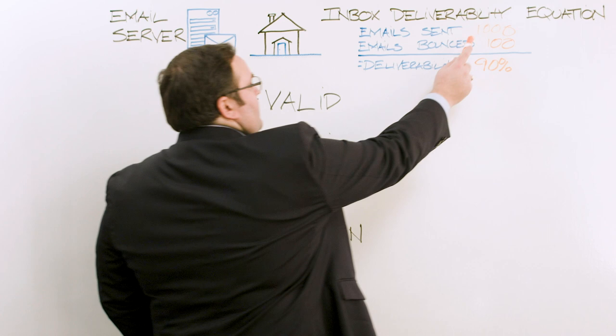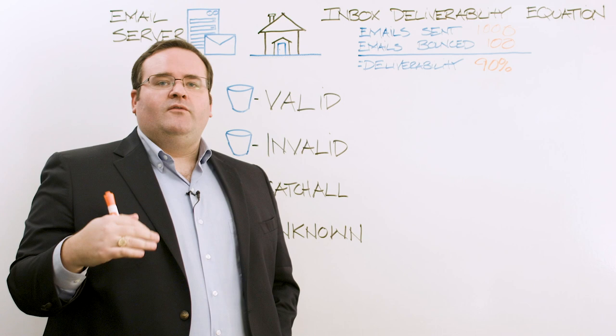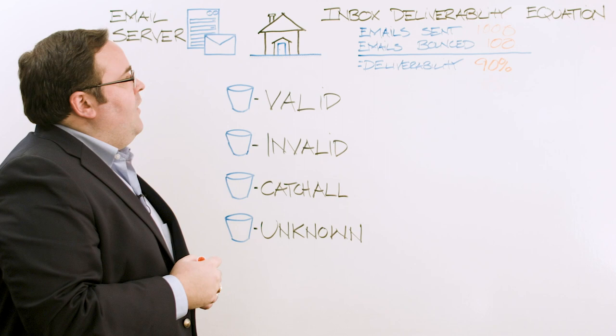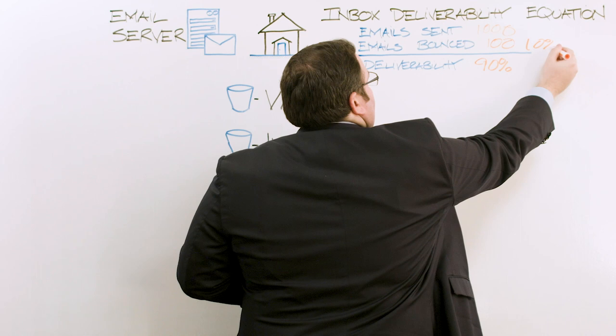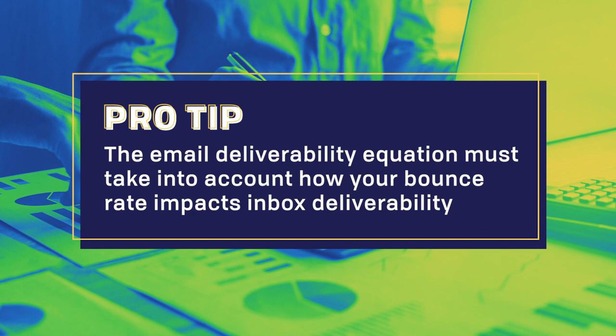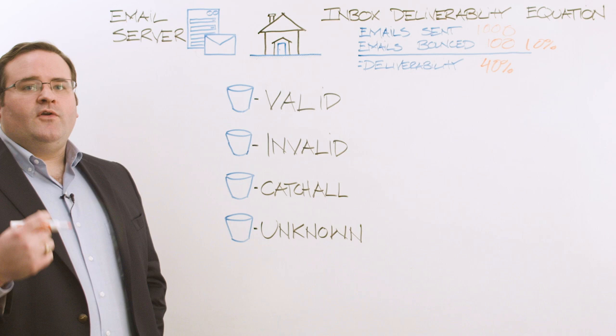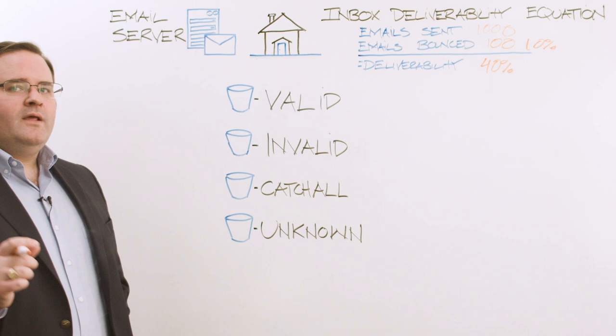The number of emails bouncing has a huge effect on your actual deliverability. So let's recalculate: if we take the equation I just mentioned and ten percent of those emails are bouncing, instead of ninety percent deliverability we're actually looking at forty percent deliverability. Forty percent deliverability just because you bounce ten percent of your emails is pretty awful. So we've talked about the problem — the email deliverability equation and how it's oftentimes seen incorrectly. Now let's talk about how to fix that issue using email verification.